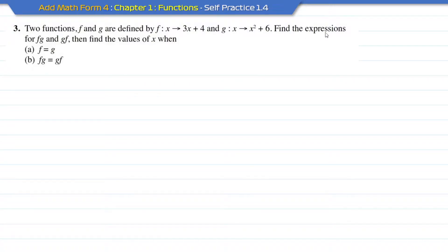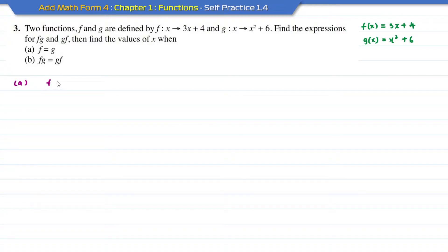We have two functions: f(x) equal to 3x plus 4, and g(x) equal to x squared plus 6. For part a, it is stated that f is equal to g, which means 3x plus 4 is equal to x squared plus 6. Looking at this, I'm going to have a quadratic equation as the highest power for x is square.